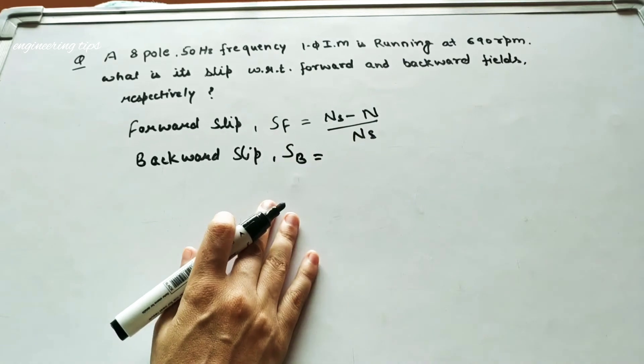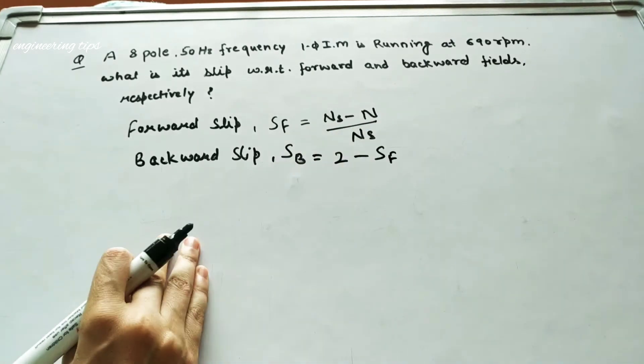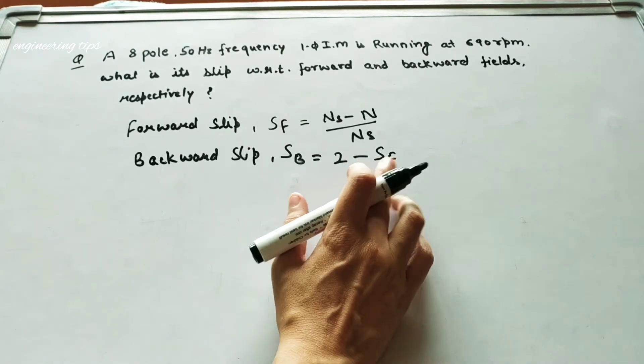Backward slip is basically 2 minus SF, which means 2 minus forward slip. This is forward slip and this is backward slip.